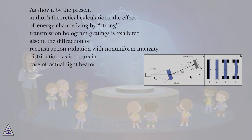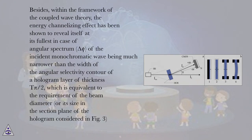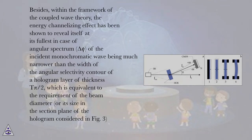As shown by the present author's theoretical calculations, the effect of energy channelizing by strong transmission hologram gratings is exhibited also in the diffraction of reconstruction radiation with non-uniform intensity distribution, as occurs in the case of actual light beams. Within the framework of the Coupled Wave Theory, the energy channelizing effect is shown to be fully revealed when the angular spectrum δψ of the incident monochromatic wave is much narrower than the width of the angular selectivity contour of a hologram layer of thickness π/2, which is equivalent to the requirement that the beam diameter be much greater than the thickness of the hologram layer π/2, where φ₁ = π/2.